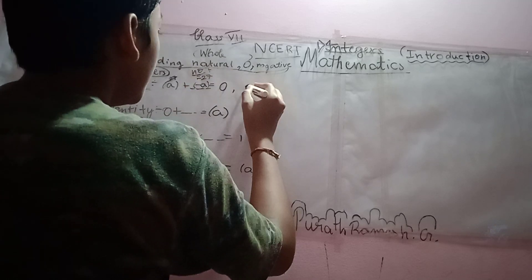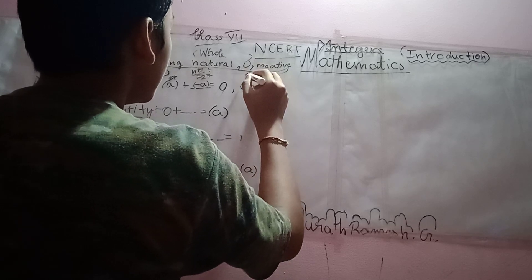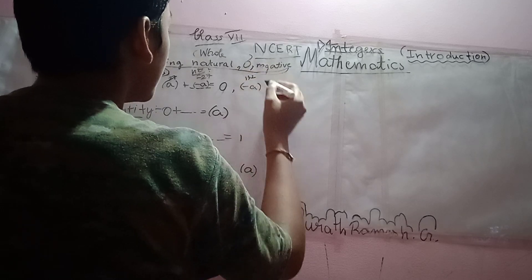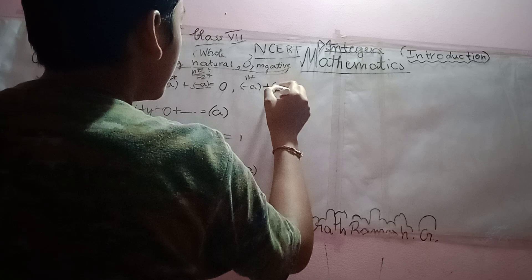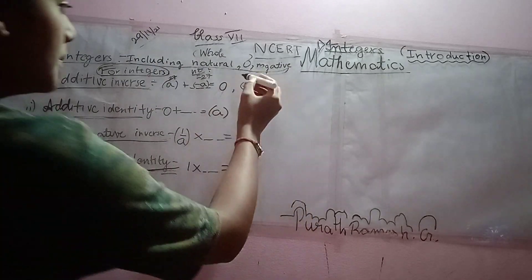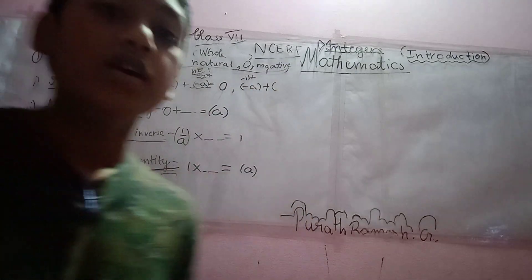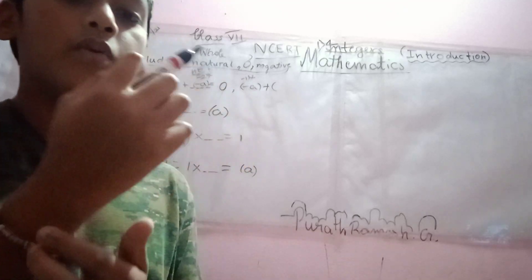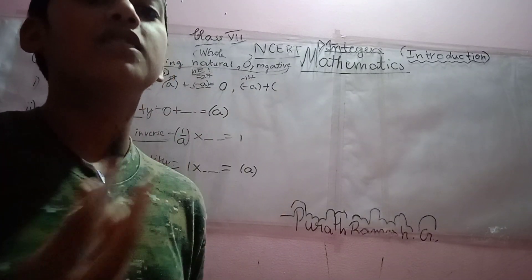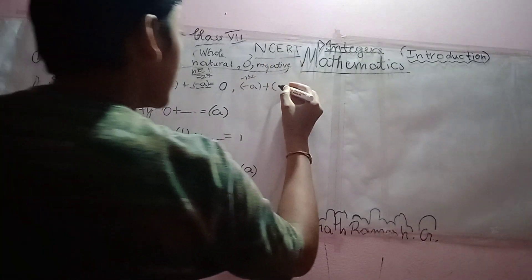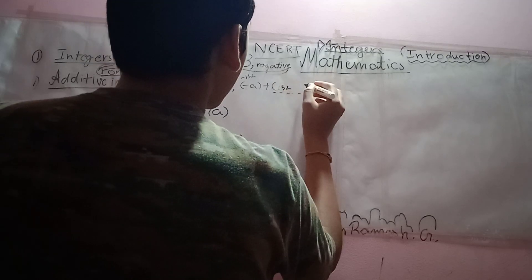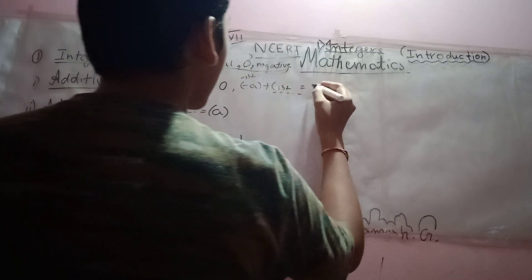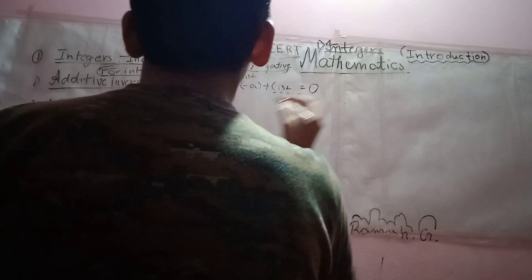But if it is minus A, in case it is 132 and if we add it to, if it is minus 132, then if we add minus 132 to 132, it will give the answer 0. So, we can write it as 132 is the additive inverse of minus 132.